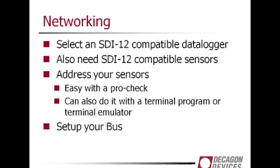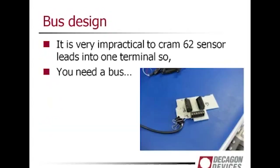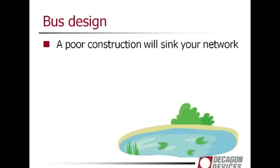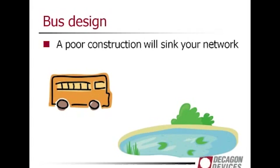The next thing you need to do is set up your bus. It's very impractical to cram 62 sensor leads into one terminal, and the bus expands that one port into as many connections as you need. It's just a way to get everybody to one place — like a bus, it will carry everybody where they need to go. But if your bus goes down, you're done — that's a lot of data you're not getting. So spend some time on your bus construction.